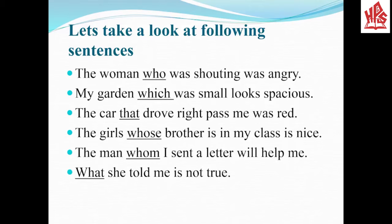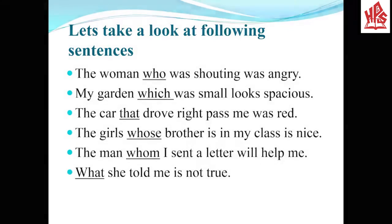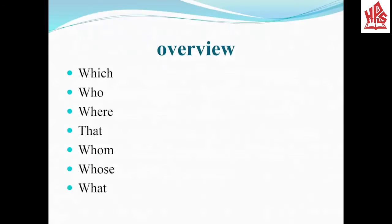All the underlined words are Relative Pronouns. Here is a list of Relative Pronouns. Let's find out the use of these. Which is used for animal and thing. Who is used for person. Where is used for place. That is used for animal, thing, and people.